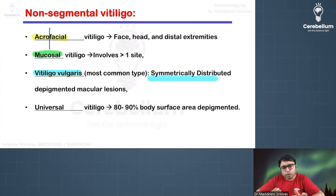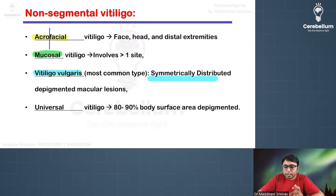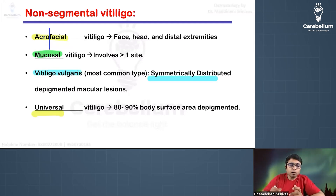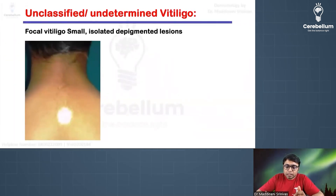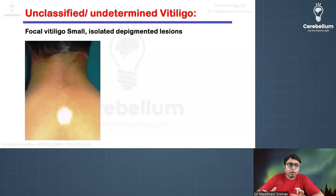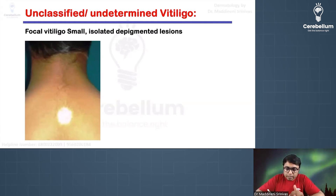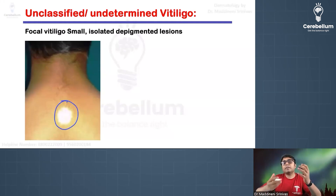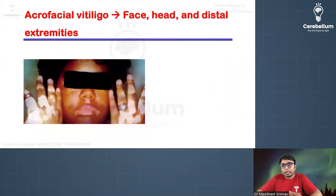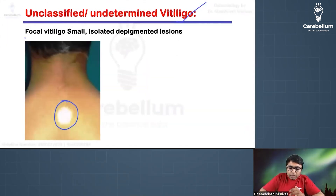Vitiligo vulgaris shows symmetrically distributed depigmented lesions all over the body. In universal vitiligo, almost the entire body is affected. The unclassified or undetermined variety, called focal vitiligo, presents with just one or two hypo- or depigmented lesions over the body, which can be seen even in normal individuals.